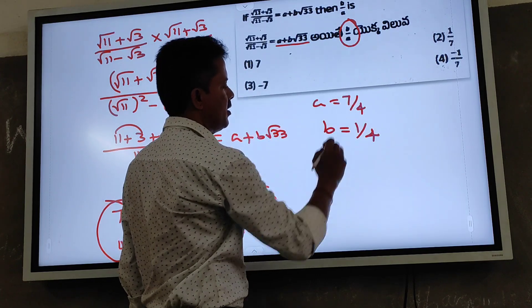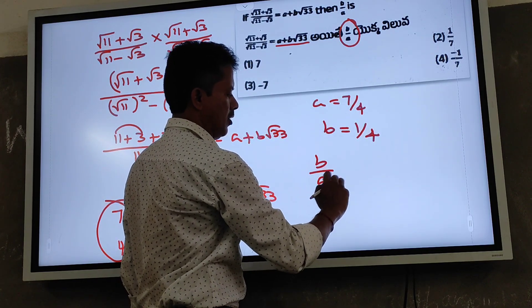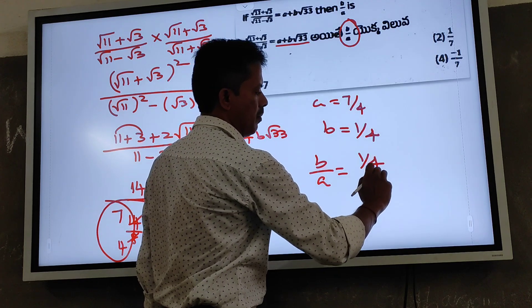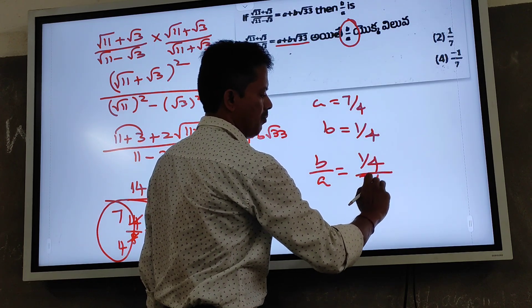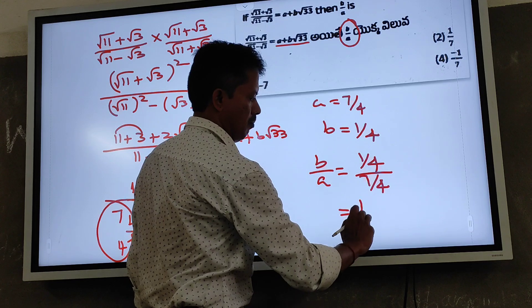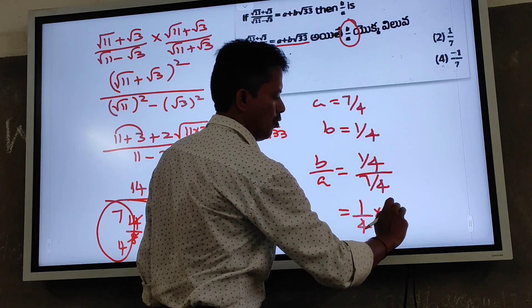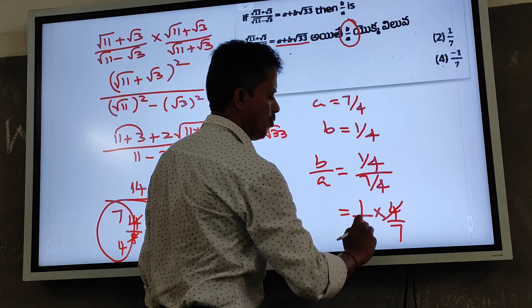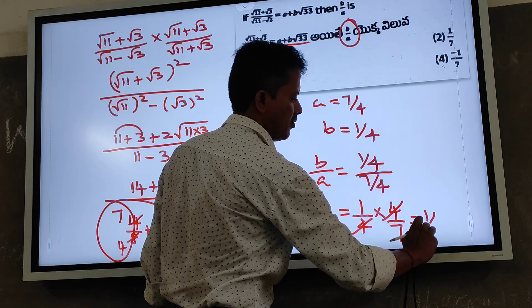b/a equals (1/4)/(7/4) equals (1/4) × (4/7). The 4s cancel, giving 1/7. The second option is the right answer.